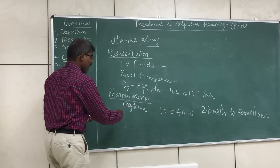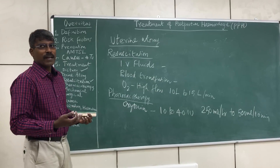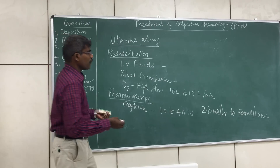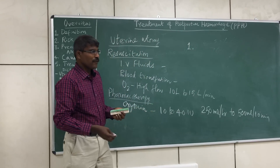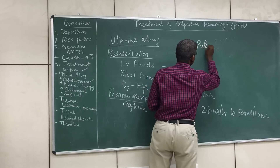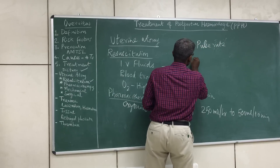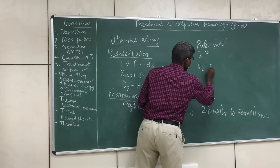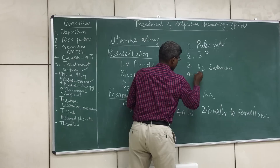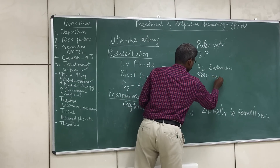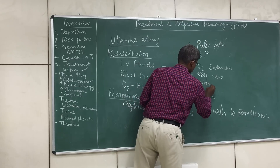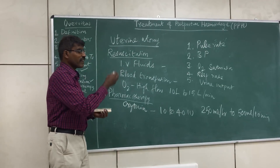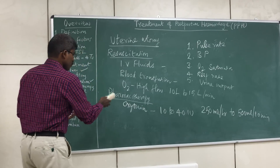Once pharmacotherapy is started, the parameters to monitor are: pulse rate, blood pressure, oxygen saturation, respiration rate, and urinary output. These five parameters help assess whether the patient's vital signs are improving.